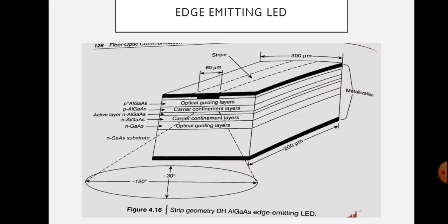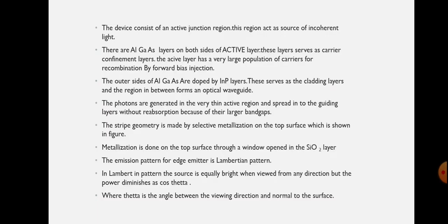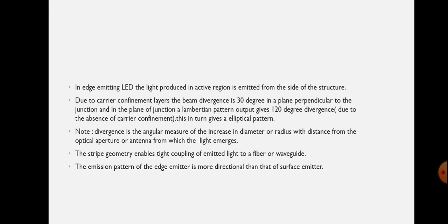This in turn gives an elliptical pattern. You can see in the figure that the divergence is 120 degrees on both the right and left side, in the plane of the PN junction. In the perpendicular plane of the PN junction, the Lambertian pattern gives 30 degrees divergence. Divergence is the angular measure of the increase in the diameter or radius with the distance from the optical aperture or antenna from which light emerges.